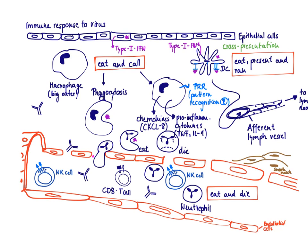If the dendritic cell is infected with the virus, the rule says it will present via MHC class 1, as MHC class 1 is the billboard for what's going on inside the cell. The infected dendritic cell presents its antigen via MHC class 1 and travels to the lymph node to initiate the CD8 T-cell response. However, if the dendritic cell is not infected and just eats up the viral particle, you would expect presentation via MHC class 2, and you would not necessarily expect a CD8 T-cell response.